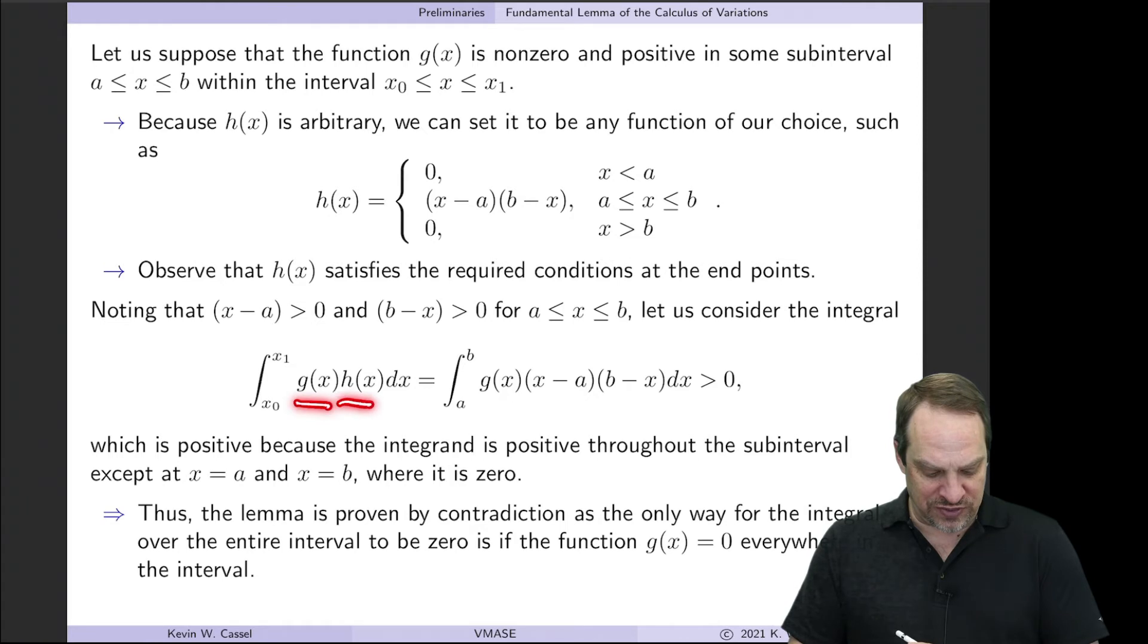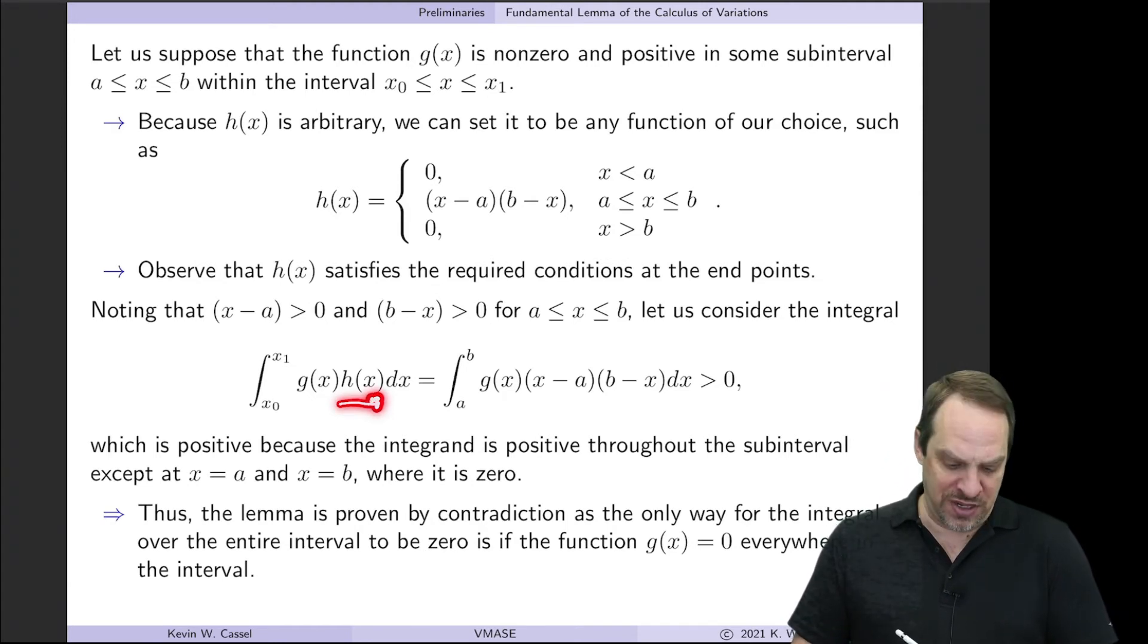Integral of g(x) times h(x) from x0 to x1. Well, if h is 0 for x less than a and 0 for x greater than b, then the only contributor to the integral is going to be from a to b. And that's our g(x), which we said is non-zero and positive, times (x-a) times (b-x).